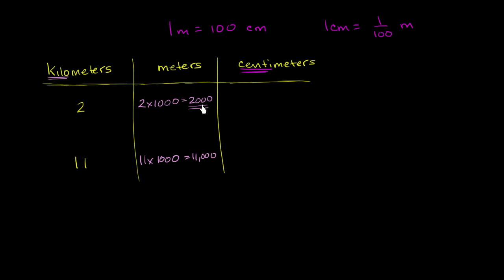So if we wanted to write 2,000 meters as centimeters, we could say we have 2,000 meters. Each of those are going to be equivalent to 100 centimeters. And so this is going to be equal to 2,000 times 100. Well, that's going to be 2.